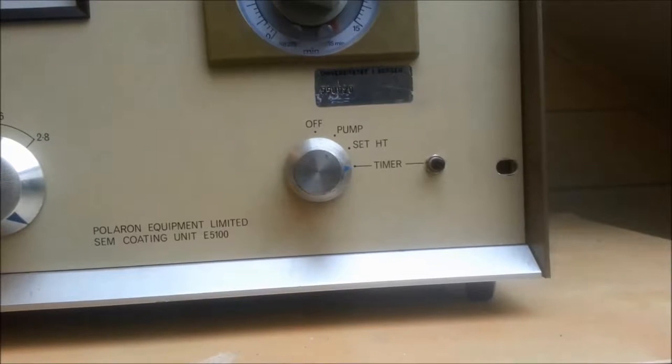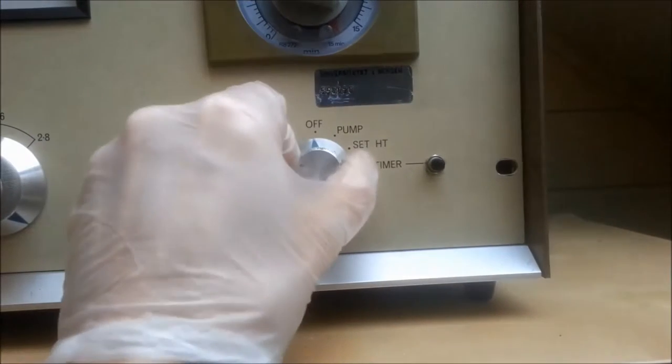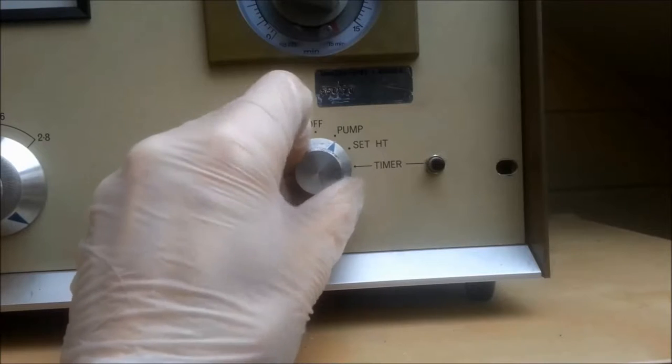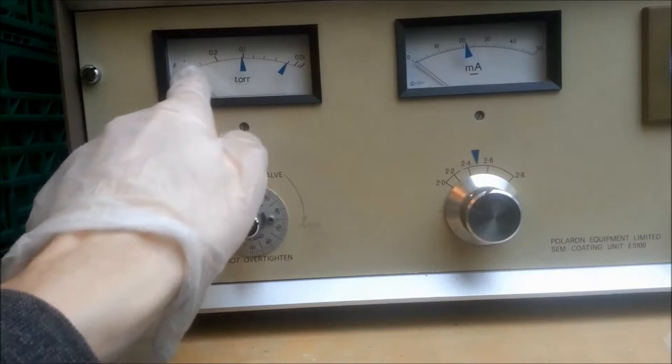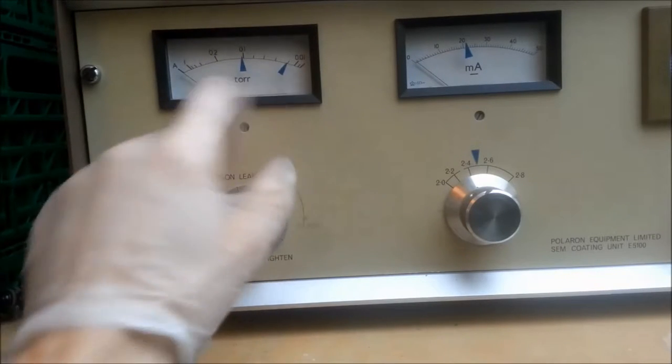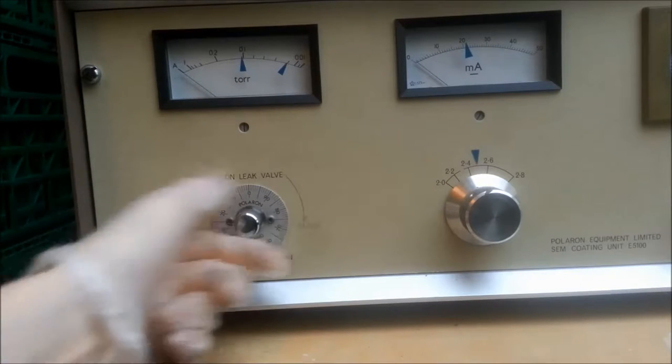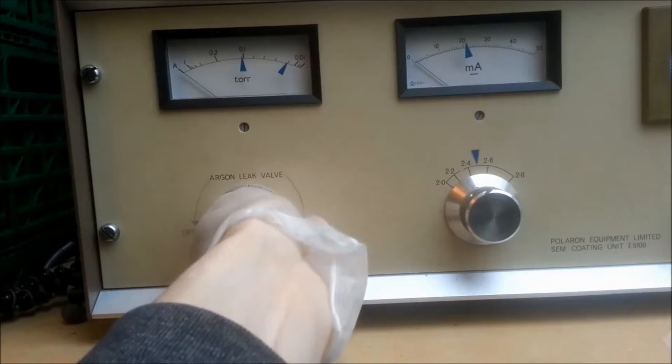Right underneath is the function selection, where off turns everything off. If you set it to pump, a relay will switch on anything connected to the power plug in the back. Usually that will be your pump. You then start pumping down the chamber to suitable pressure for flushing the system with noble gas, usually argon.